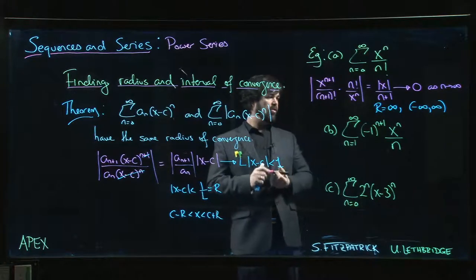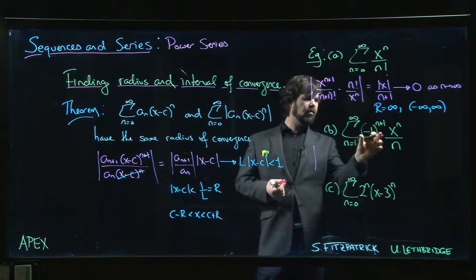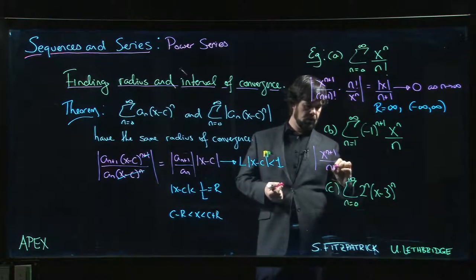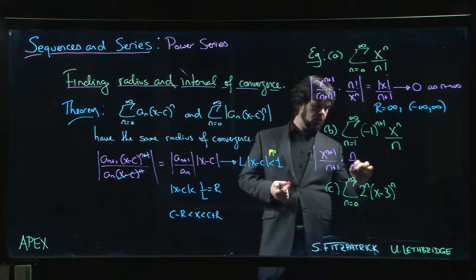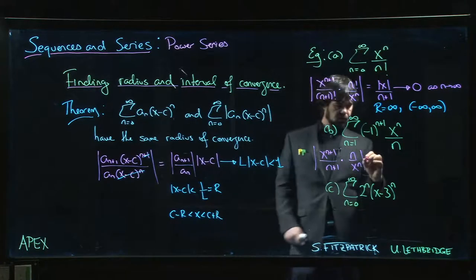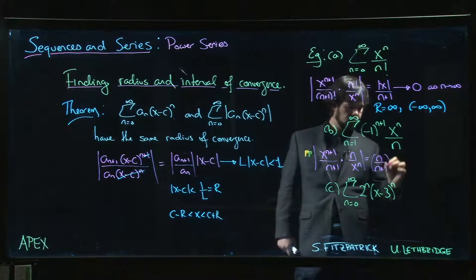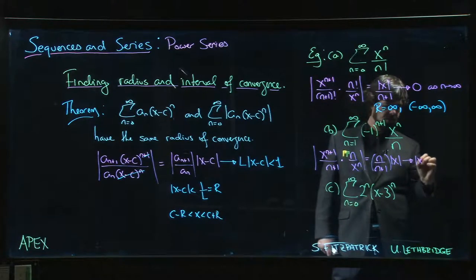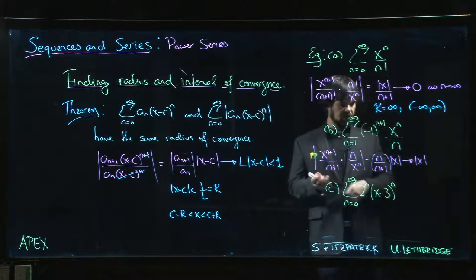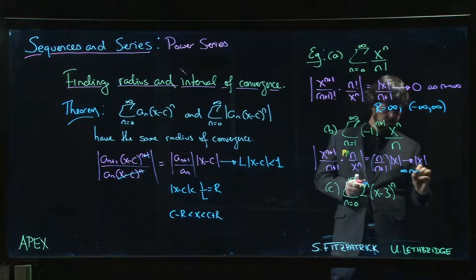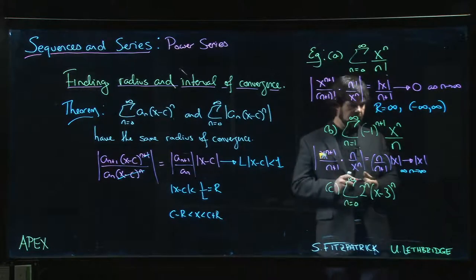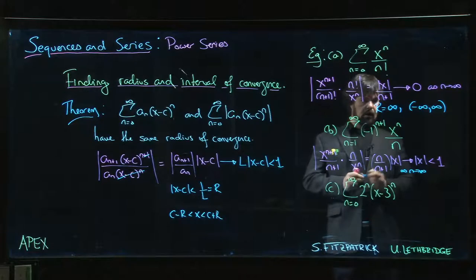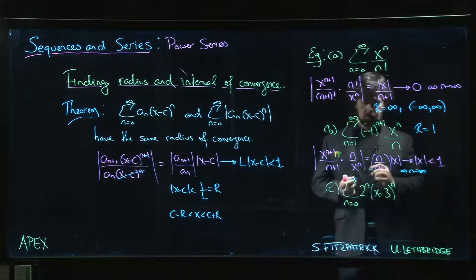For the next example, taking the absolute value kills the sign factor. The ratio test gives |x^{n+1}| times n over [(n+1) times |x^n|], which equals n/(n+1) times |x|. As n goes to infinity, that limit is just |x|. So we need |x| < 1, which means the radius of convergence R equals 1.